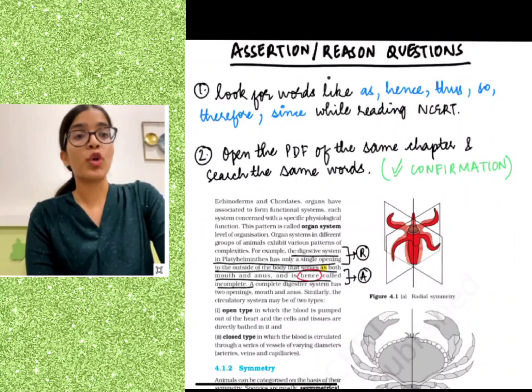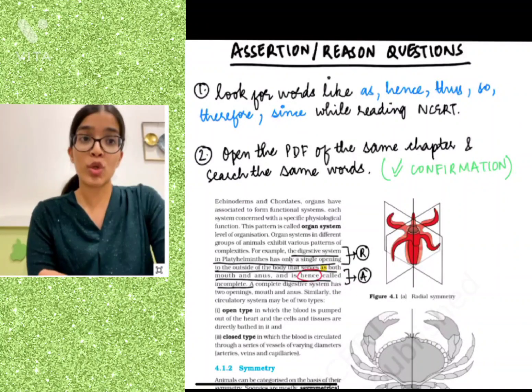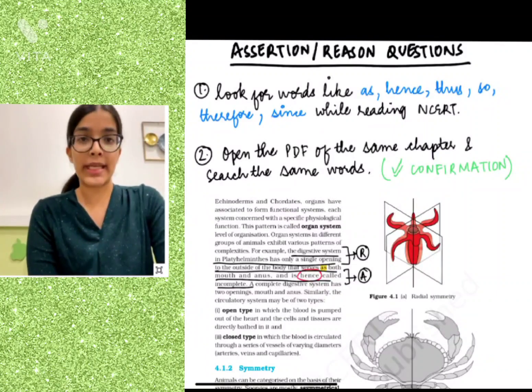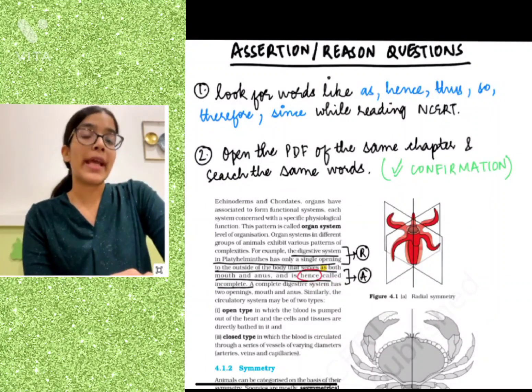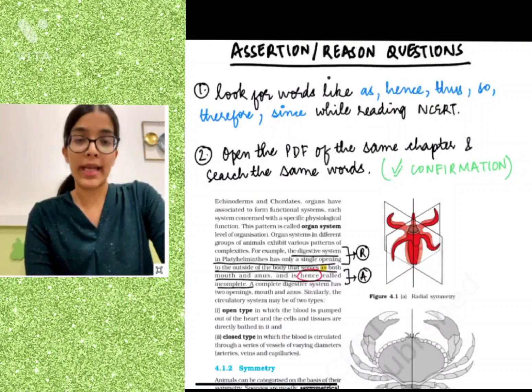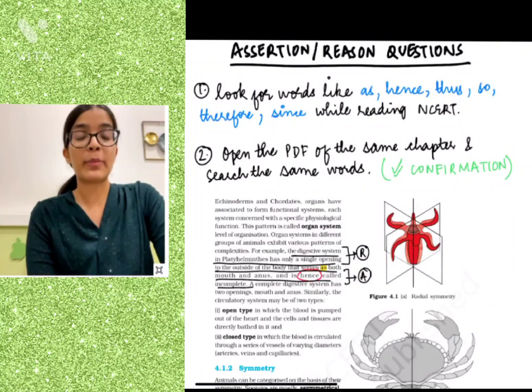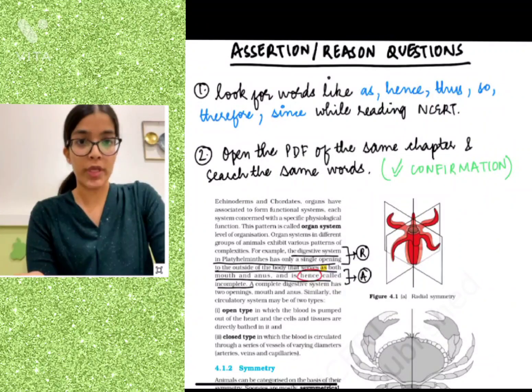Firstly, you should look for keywords like as, hence, thus, so, therefore, and since while reading NCERT. Whenever I read any chapter, I made it a point to highlight these words and then underlined the statements that preceded and succeeded them, because they would be the assertion and reason statements.